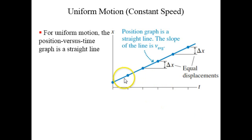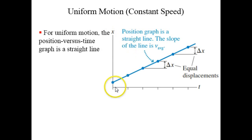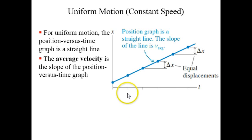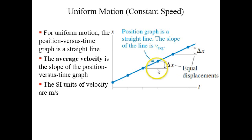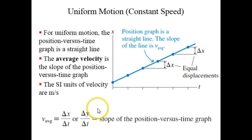If you make a plot of your position x along a straight line versus your time t, that's called a position versus time graph. The average velocity is the slope of this graph — slope is rise over run — so you take delta x as the rise divided by delta t as the run.